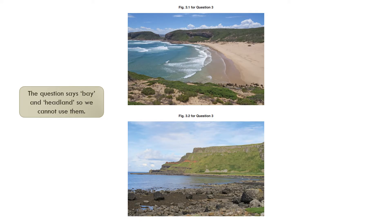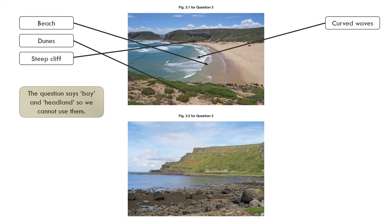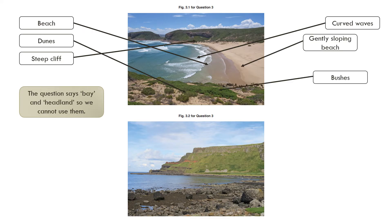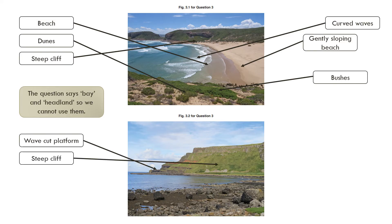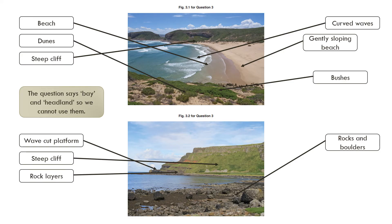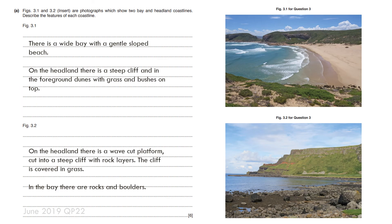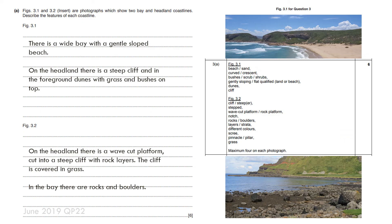Here the question says bay and headland, so we cannot use those terms. Going around looking at the various landforms: I can see a beach, some dunes, and a steep cliff. The waves have a curved front. The beach is gently sloping and there are bushes around. In the bottom image I can see a wave-cut platform, again a steep cliff, some layers of rock, rocks and boulders closer to me, and some grass along the cliff. When writing the answer: there is a wide bay with a gently sloped beach; on the headland there is a steep cliff; in the foreground there are dunes with grass and bushes on top; on the headland there is a wave-cut platform cut into a steep cliff with rock layers; the cliff is covered in grass; in the bay there are rocks and boulders.